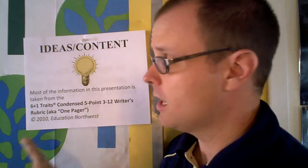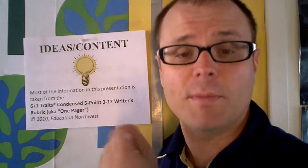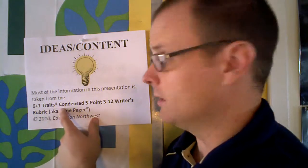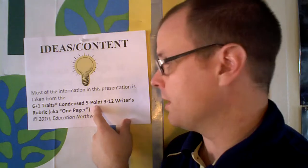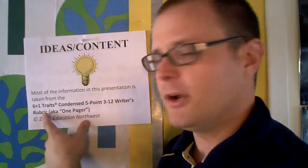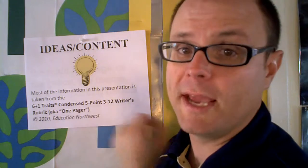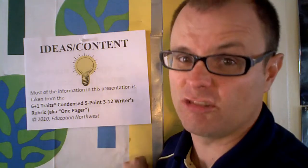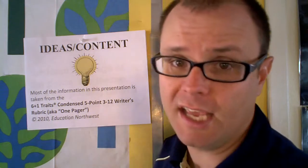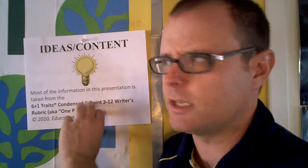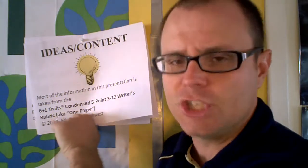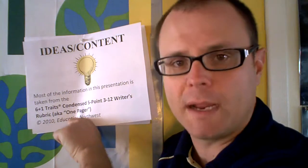This overview is for those who may be unfamiliar with the six traits or just need a reminder. All this information is either directly taken from or paraphrased from the Six Plus One Condensed Five Point Three Through Twelve Writer's Rubric — they call it the one pager because the full title is very long and cumbersome. It was copyrighted in 2010 by an organization called Education Northwest, who developed a lot of the six traits material. This is the rubric we use to grade your papers.